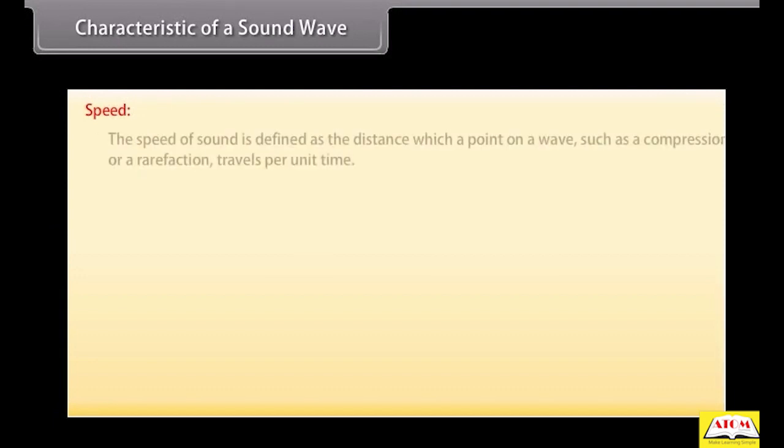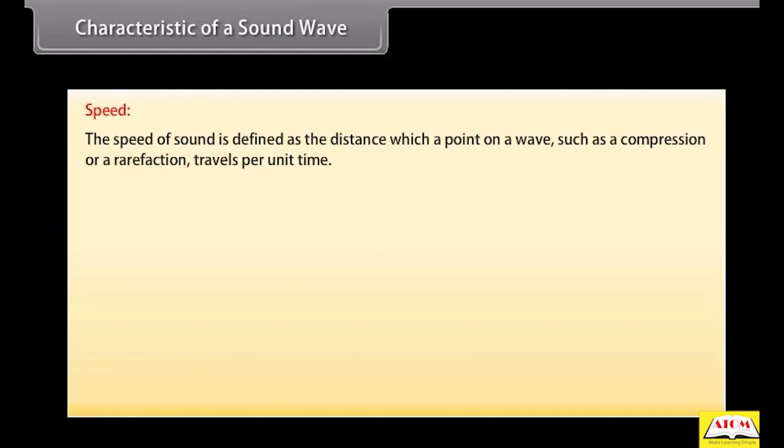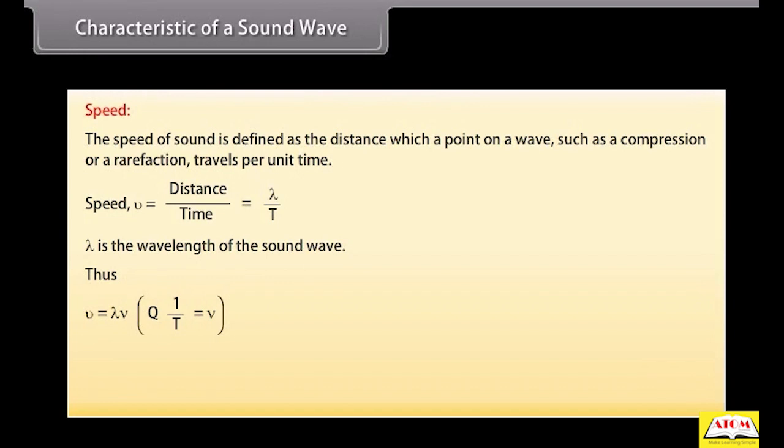Speed. The speed of sound is defined as the distance with which a point on a wave, such as a compression or a rarefaction, travels per unit time. We know that speed v is equal to distance upon time, which is equal to lambda upon T. Here lambda is the wavelength of the sound wave. It is the distance travelled by the sound wave in one time period of the wave. Thus, v is equal to lambda into nu. That is, speed is equal to wavelength into frequency.